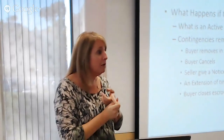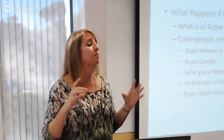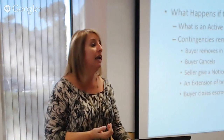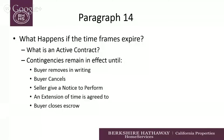The seller can give a Notice to Perform. Technically we do not have to have a contingency removal to close escrow, but we want to make sure we have one. If you're on the listing side, you want a contingency removal to protect your seller and make sure the buyer's money is at risk if they can't close. Once the buyer signs the contingency removal removing all contingencies, then their deposit becomes at risk.